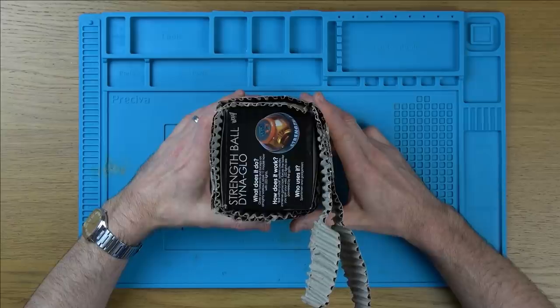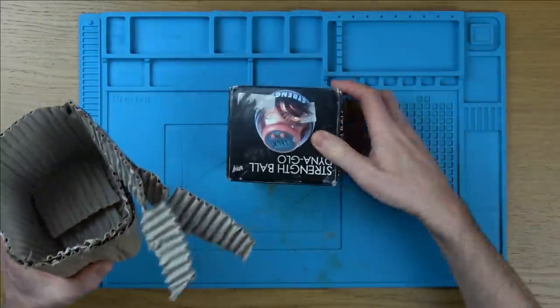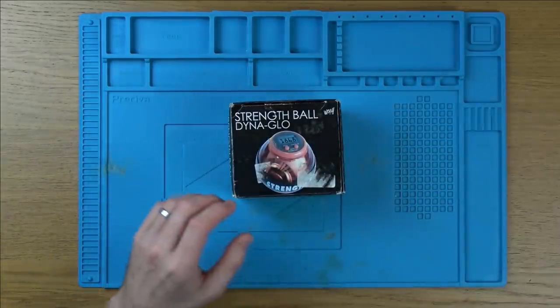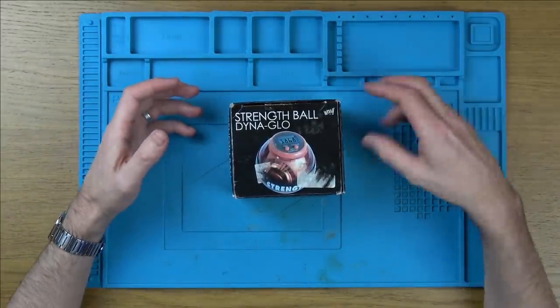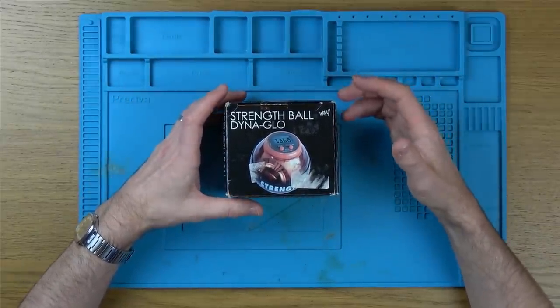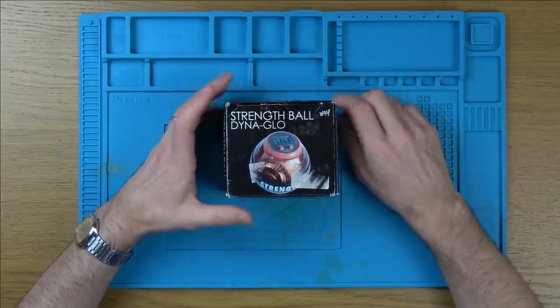Hi there, my name's Vince from MyMateVince.com and in this video today it's another tea break repair. We're going to be fixing up this little StrengthBall Dyna-Glow here. I believe it's used for strengthening up your arms and also as a bit of fun because it probably feels quite nice if it's spinning really fast and you're keeping the momentum up.